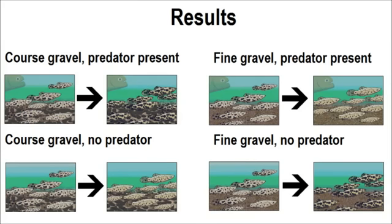Spot size tells an equally interesting story. In the presence of predators, whether weak or strong, coarse gravel promoted relatively larger spots while fine gravel favoured relatively smaller spots — easily interpreted as spot size mimicking stone size. Fascinatingly, however, in the ponds where there were no predators at all, Endler found exactly the reverse: fine gravel favoured large spots on male guppies and coarse gravel favoured small spots. They are more conspicuous if they do not mimic the stones on their respective backgrounds, and that is good for attracting females. Neat.